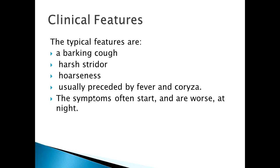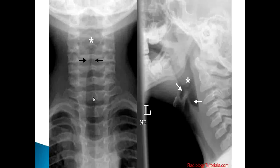Stridor can sometimes be heard without a stethoscope, but most of the time you need a stethoscope and a silent room to auscultate for it. Symptoms are usually worse at night. The radiographic presentation shows narrowing of the airway in the subglottic area — this is called the steeple sign on the X-ray.